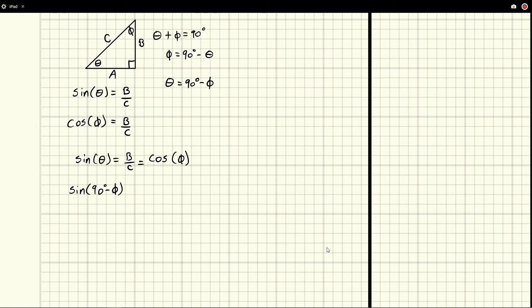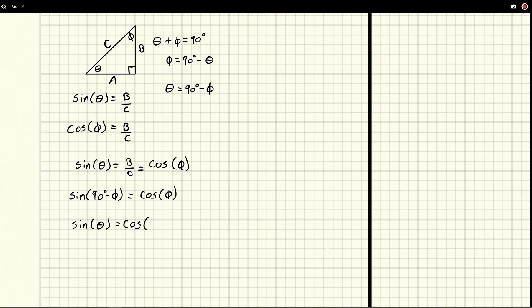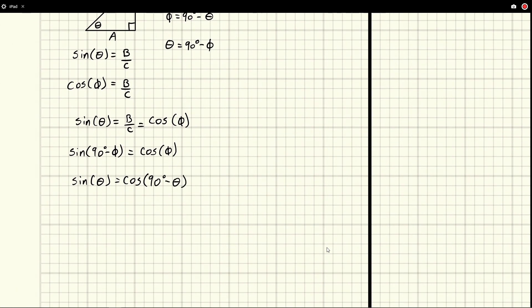We could say, well, sine—we'll replace theta with 90 degrees minus phi—is equal to cosine of that same angle phi. And we could say conversely, if we were to replace the phi instead, we could say sine theta is equal to cosine, and then what's our definition of phi? Well, our definition of phi is right here: 90 degrees minus theta. And now we have phi in terms of phi and theta in terms of theta. And it turns out you can do this with all the trig functions and come up with what we call co-function pairs.